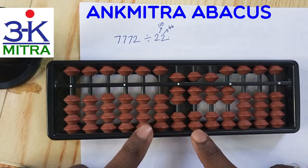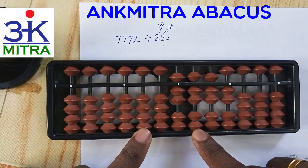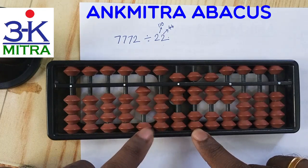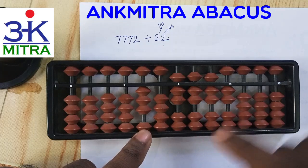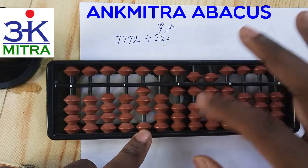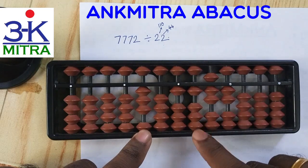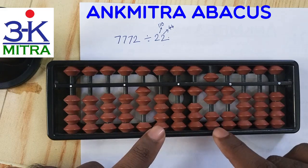We place 7772 on the abacus in the same fashion as before, starting with the third rod on the dividend. From 77, we can subtract 3 times 22 which is 66 — 4 times 22 cannot be subtracted, so we stop at 3. I take 3 on the corresponding third rod of the answer set and subtract 66 from 77: minus 6 here, minus 6 here. The remaining number on this rod is 11, which is smaller than the divisor.